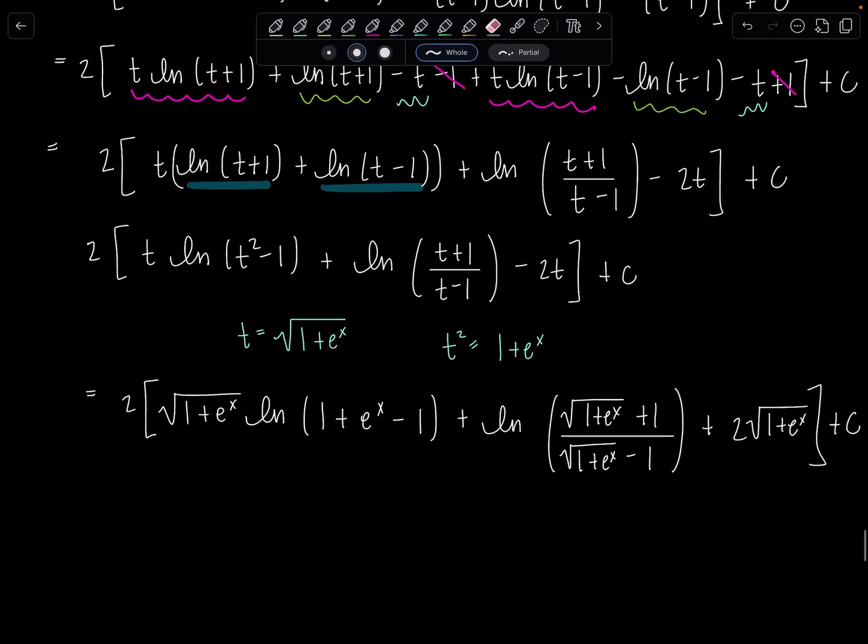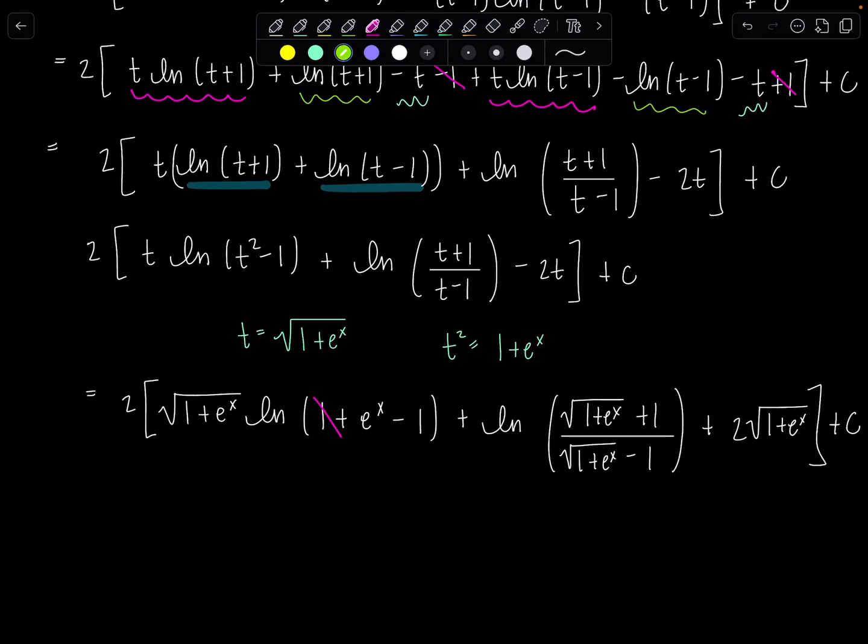Okay. Do you see? We can clean up quite a bit more. The 1s cancel. Then you just have natural log of e to the x, which is x. So 2x times the square root of 1 plus e to the x. Let me put this guy in the front with him because notice I can factor out the square root of 1 plus e to the x.